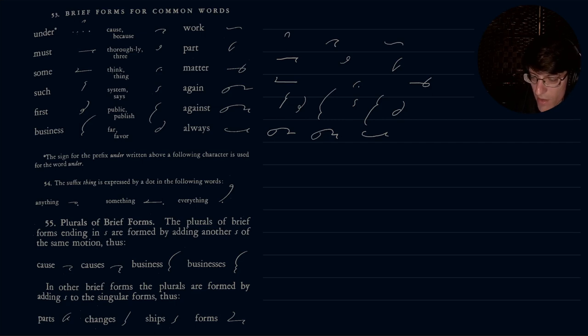Then we have the suffix thing is expressed by a dot in the following words. So anything is just knee-ing. Something is some-ing. And everything is ev-re-ing.